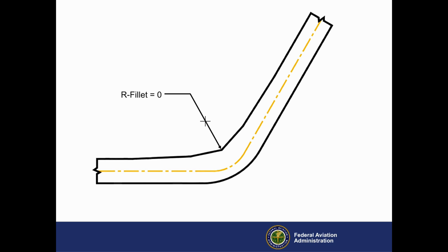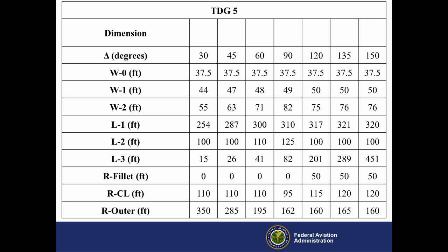R-fillet, the radius of the inner curve, which is often zero as shown here. R-centerline, the radius of the centerline curve. And R-outer, the radius of the curve of the outer taxiway edge. Note that these three radii are not concentric. For each TDG, tables in the AC like the ones shown here show the values for these widths, lengths, and radii for each standard delta.